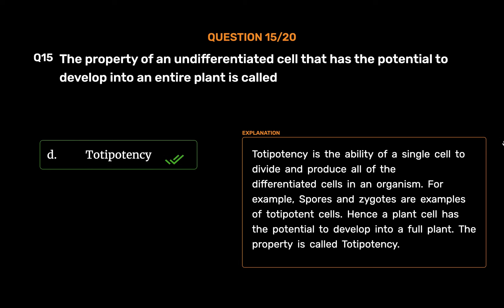Totipotency is the ability of a single cell to divide and produce all of the differentiated cells in an organism. For example, spores and zygotes are examples of totipotent cells. Hence a plant cell has the potential to develop into a full plant — the property is called totipotency.